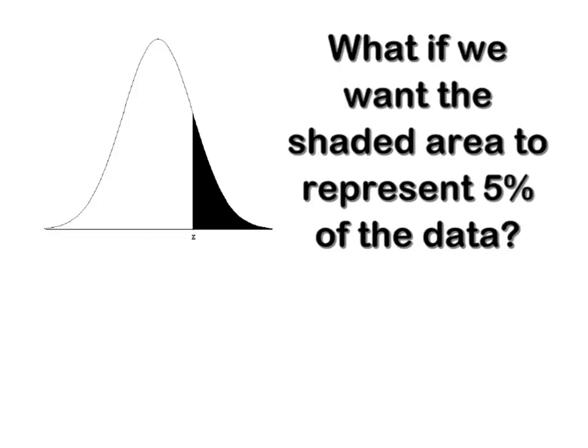So what if I wanted the shaded area of this curve to represent five percent of the data? That would give me five percent here and I know that gives me 95 percent here. So in this case we would refer to that as alpha of 0.05. What I'm looking for is a critical z value that splits this curve so that five percent of the data is to the right of that z and the other 95 is to the left.